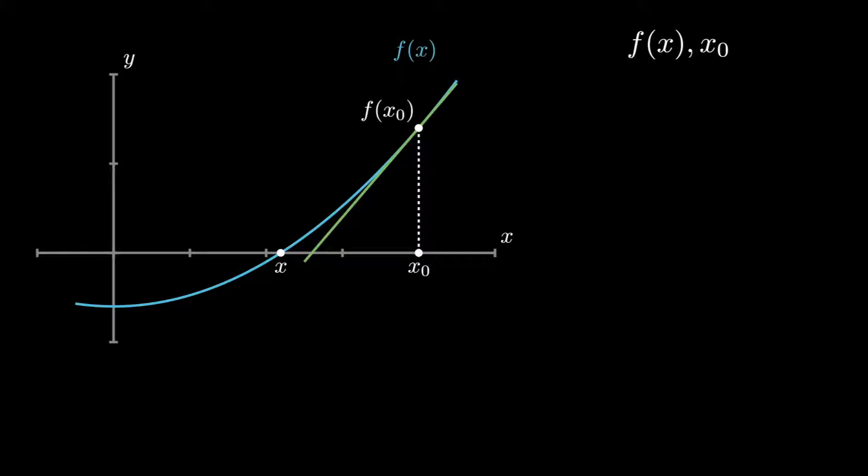We can draw a tangent line to the curve at f(x_0). This tangent line cuts the x-axis at a point as we can see, and this point is nearer to the root. Let's call this point x_1.